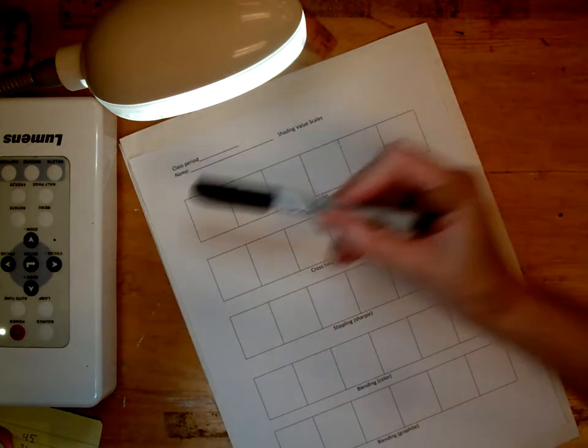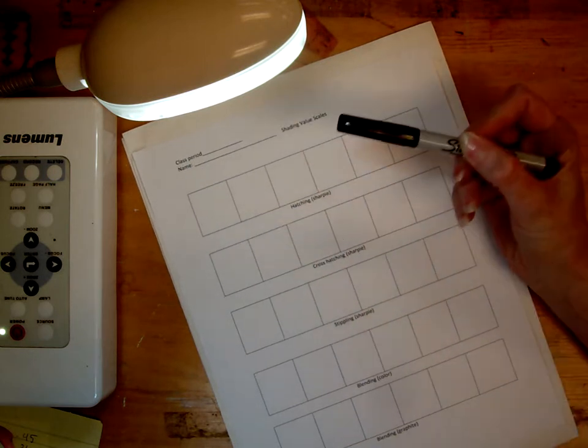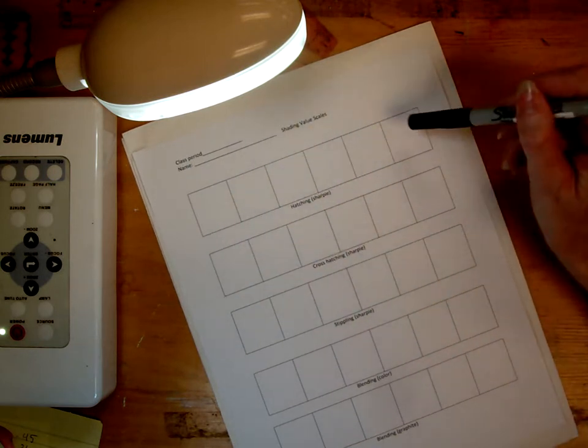Hatching is drawing lines at a diagonal. The closer together they are, the darker they are. The fewer they are, the further spread out they are.